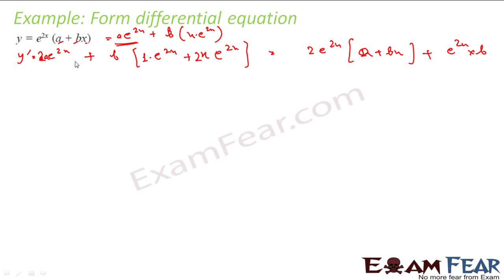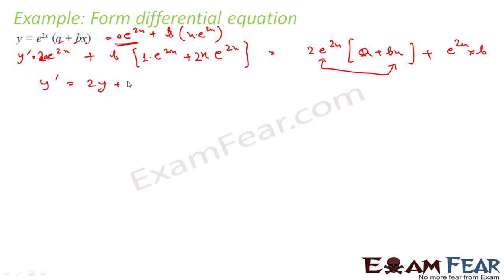Now I have to find y double dash also. To make life simple, observe that the e^(2x)(a + bx) part is y itself, so you need not differentiate that part again from scratch. So y dash becomes 2y plus b·e^(2x).